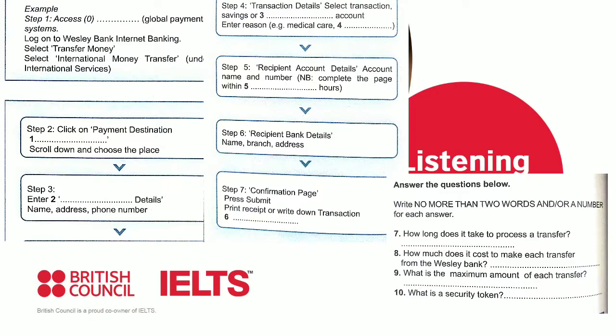That's great, I'm online now. Good. First you have to log on to Wisley Bank Internet Banking and select Transfer Money. Okay. Once you've done that, select International Money Transfer. I don't see it... It's the first option under the heading of International Services.